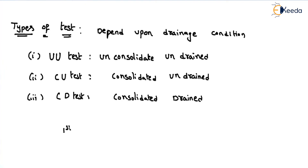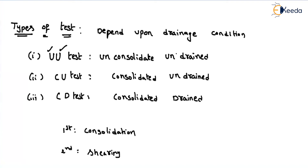The first stage is the consolidation stage and the second stage is the shearing stage. The first term in the test name represents the first stage, and the second term represents the second stage. Unconsolidated means drainage is not allowed — water will not escape through the soil. Undrained also means water is not allowed. So in the UU test, the drain valve is always kept closed in both the first and second stages, which means the test can happen very quickly. That is why it is also called a quick test.